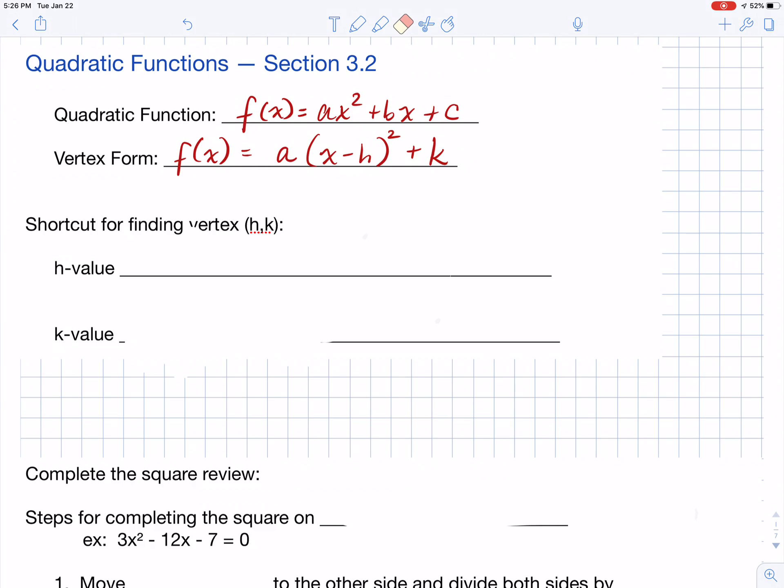Let's talk about finding the vertex using a shortcut method. So I'm calling the vertex, you'll notice here hk. If I want to find the h piece of my vertex, then I have a handy dandy little formula negative b over 2a.